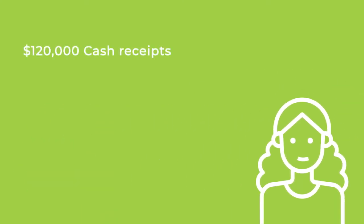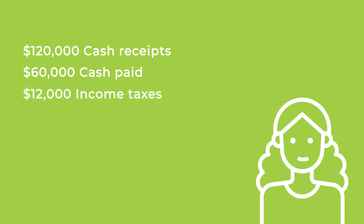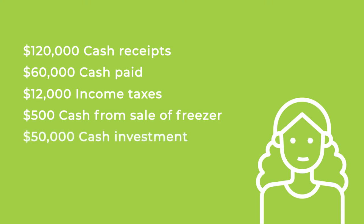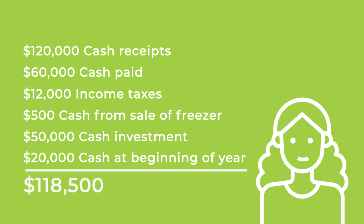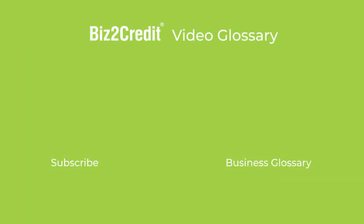$120,000 cash receipts from customers; $60,000 cash paid to employees and vendors; $12,000 in income taxes; $500 cash income from sale of old freezer; $50,000 cash investment from business partner; $20,000 cash at beginning of year. Cash at the end of the year — the total of all the above items — comes to $118,500. She's happy to find that the B&B's annual cash flow is positive.